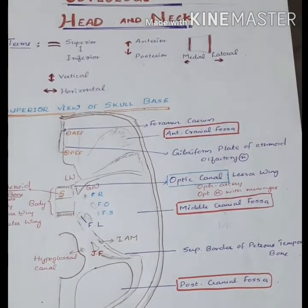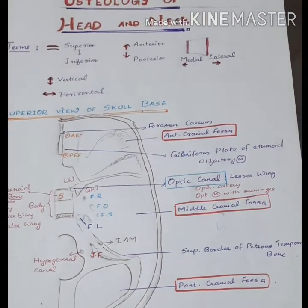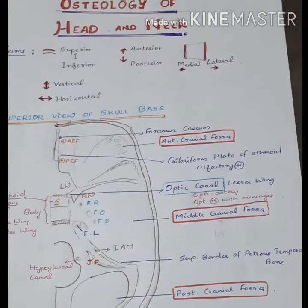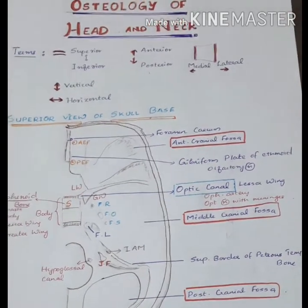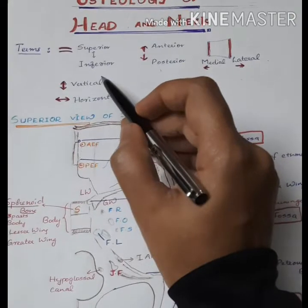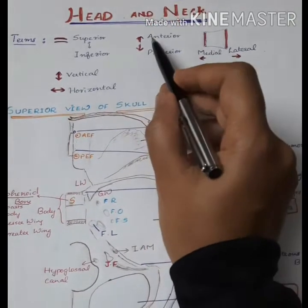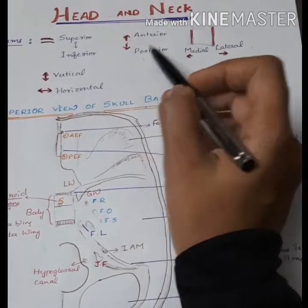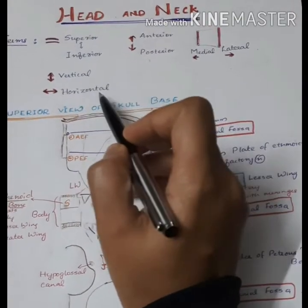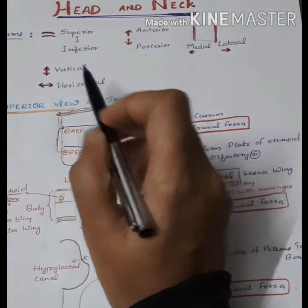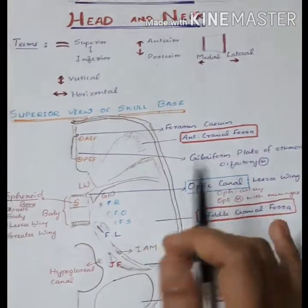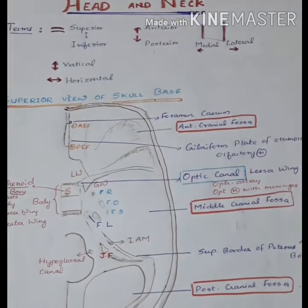These are the basic terms we use while studying the anatomy of our body: superior and inferior, anterior, posterior, medial, lateral, vertical, horizontal. These are the basic terms we should know while studying the anatomy of our body.